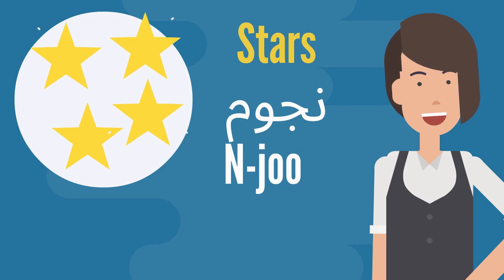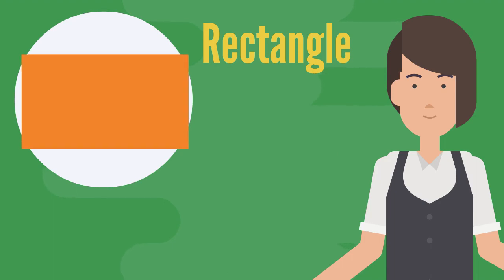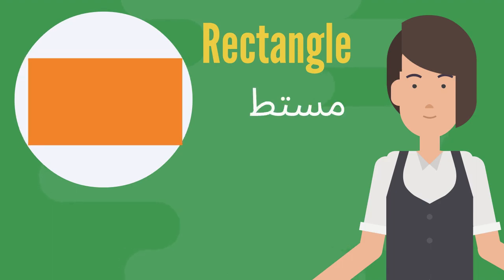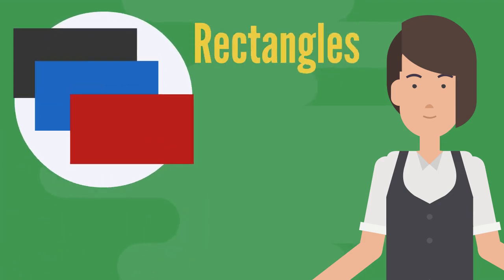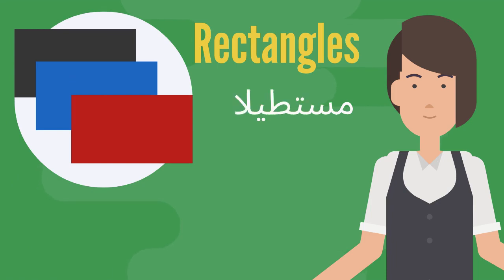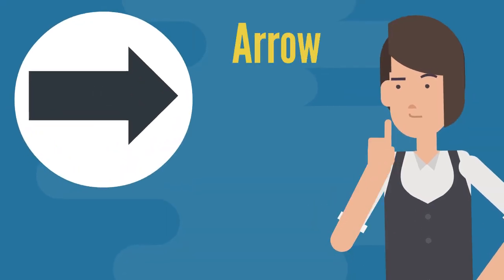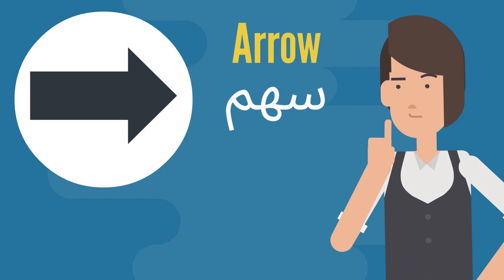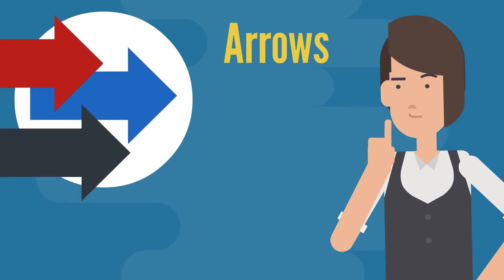Rectangle — مستطيل. Rectangles — مستطيلات. Arrow — سهم. Arrows — سهام.